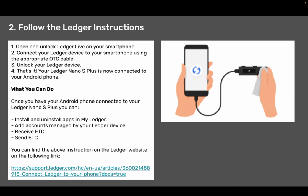Step two: follow the Ledger instructions. One, open and unlock Ledger Live on your smartphone. Two, connect your Ledger device to your smartphone using the appropriate OTG cable. Three, unlock your Ledger device. Four, that's it. Your Ledger Nano S Plus is now connected to your Android phone.